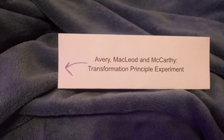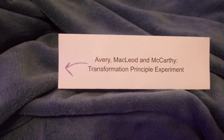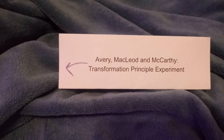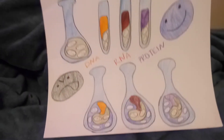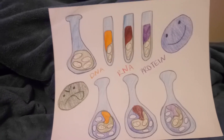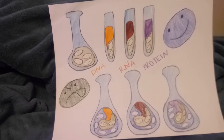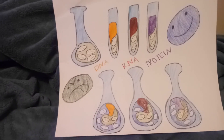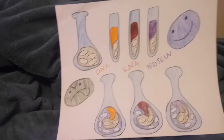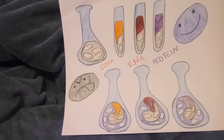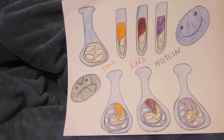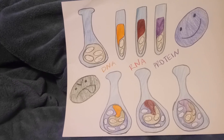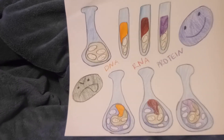It was previously believed before this experiment that proteins probably carried the genetic material in an organism. In the Avery, McLeod, and McCarthy experiment, they elaborated on a previous experiment by a scientist named Griffith, which established the protein genetic material assumption.